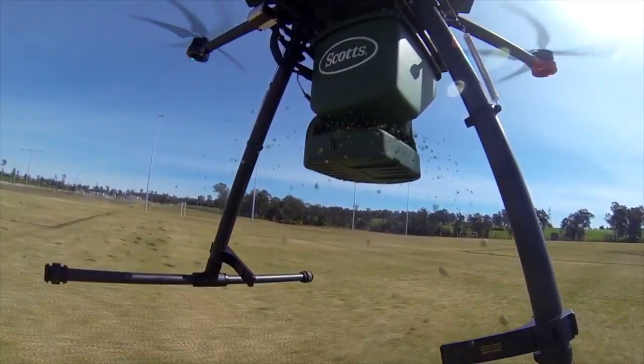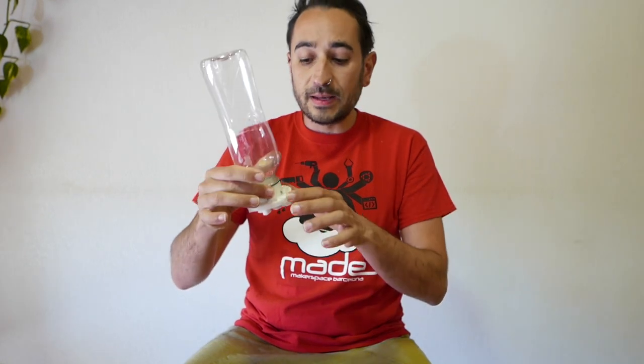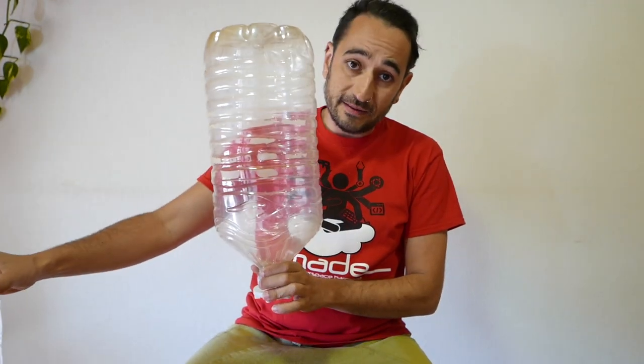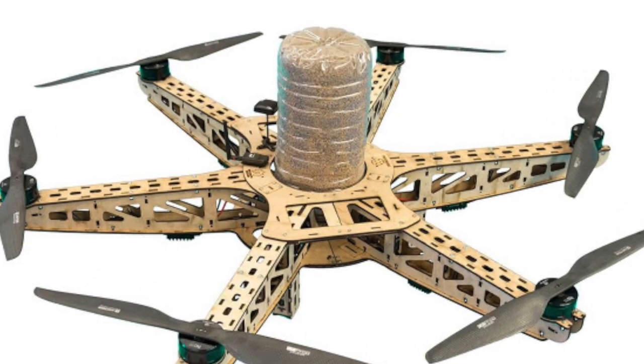So we do not need any motor or extra battery. Just attach it to a plastic bottle, open and close. We can load seeds in a bottle of 8 liters of water.